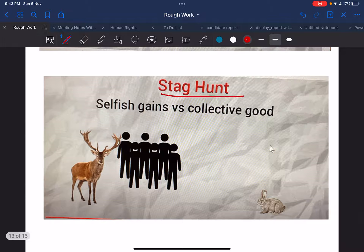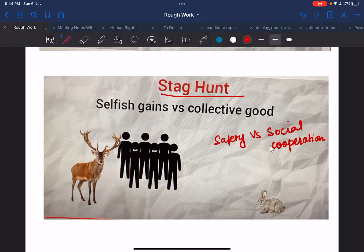Then we go to the third game which is called Stag Hunt. This Stag Hunt game describes the conflict between safety and social cooperation - the conflict between safety versus social cooperation.